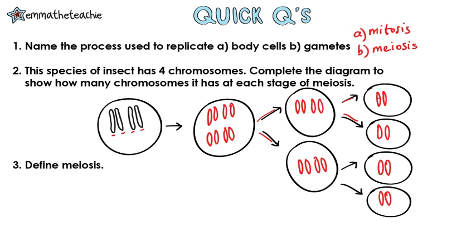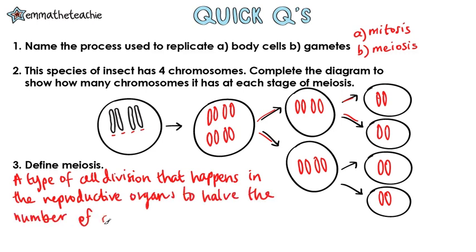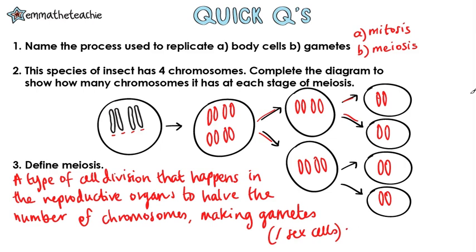Three: define meiosis. Meiosis is a type of cell division that happens in the reproductive organs to halve the number of chromosomes, making gametes, or sex cells.